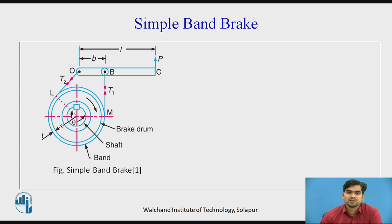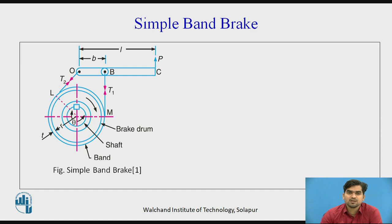This is a schematic diagram of a simple band brake. A lever is there, and the band is attached to it. On that band, the frictional material is lying. So when we pull the lever by an amount of force P in the upward direction, the rotating drum will get stopped. We will see this in detail.